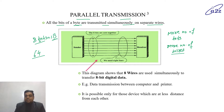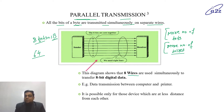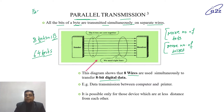As this diagram shows, there are eight bits being sent from sender to receiver, so eight lines are used. This is parallel transmission — more number of bits means more number of wires required. This diagram shows that eight wires are used simultaneously to transfer eight-bit digital data. If there is data of 64 bits, then 64 wires will be used. The data transmission process completes fast, so parallel transmission is very fast because it transfers data simultaneously.